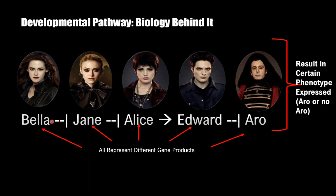We see a t-bar between Bella and Jane — this means that Bella suppresses Jane. In the Twilight Saga, Jane has a power to look at people and make them feel pain, but Bella has a shield power and can project that shield for herself or for her friends, so she suppresses Jane's power. Over here we have an arrow, meaning Alice activates Edward. Edward has the ability to read minds, and Alice has the ability to see the future once decisions have been made, so Edward can see into Alice's mind — Alice kind of helps Edward out, which is why she activates him.